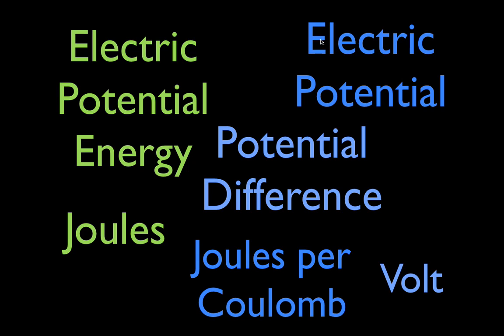These other terms — electric potential, sometimes referred to as just potential, or potential difference, sometimes referred to as electric potential difference — are different in the sense that they're not just joules, but they're the amount of joules per coulomb at a place or between two different places near a charge. They are measured in joules per coulomb, which we call the volt. So you need to remember that electric potential energy has the word 'energy' in it. These don't.